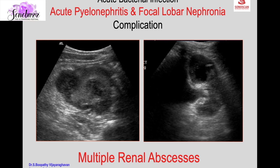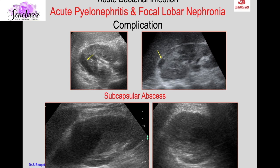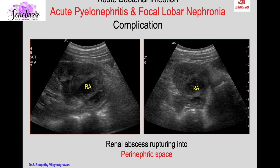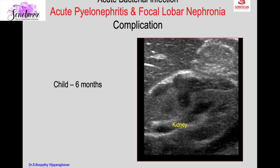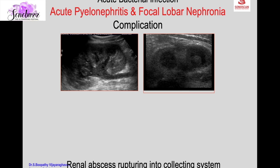Multiple renal abscesses may be seen in the parenchyma. A complication is subcapsular abscess, seen on the periphery in the coronal scan, which may be large, compressing the rest of the parenchyma, due to rupture of the renal abscess. Renal abscess can rupture into the perinephric space producing a perinephric abscess. In a six-month-old child, high-frequency scan clearly shows a small renal abscess which has ruptured and produced a biconcave perinephric abscess. The renal abscess can also rupture into the collecting system, with pus visible in the collecting system.